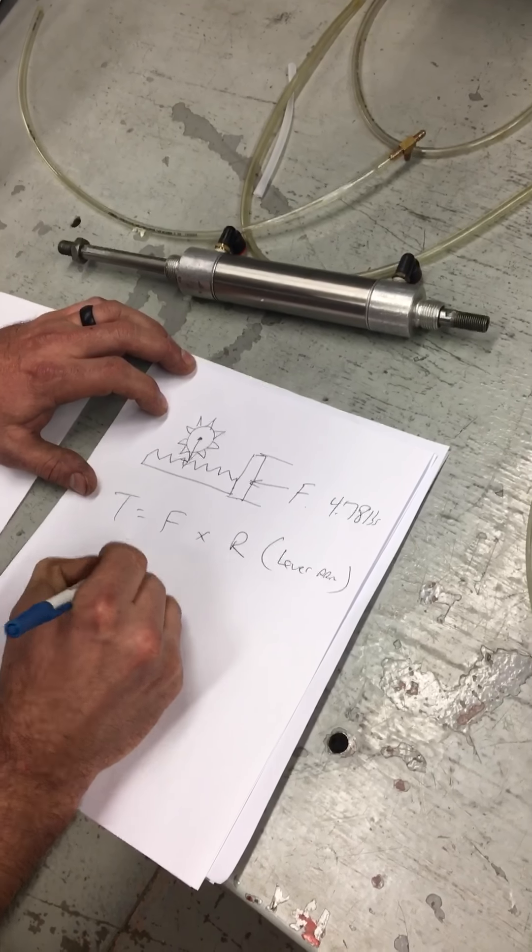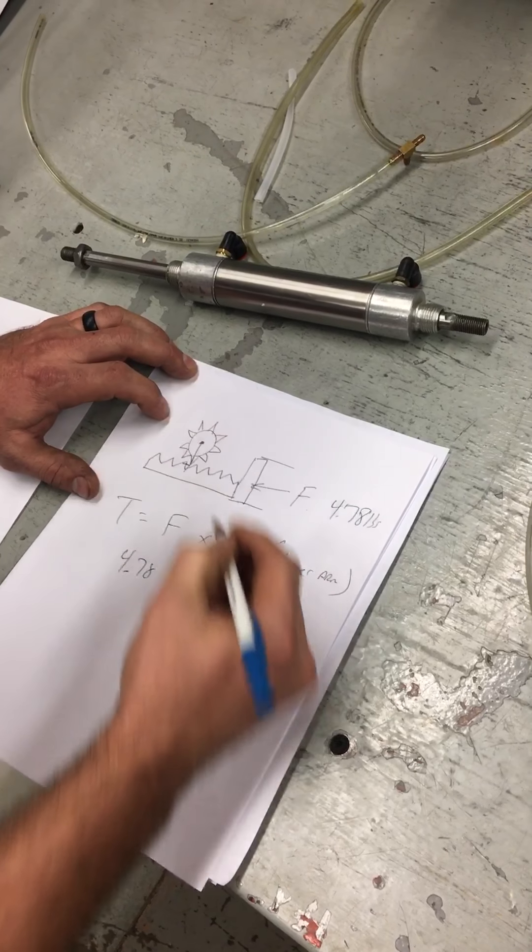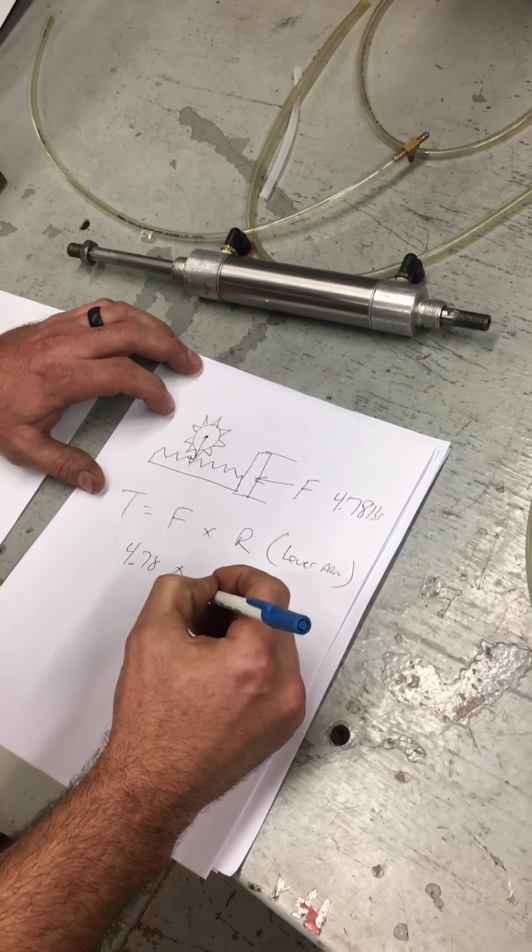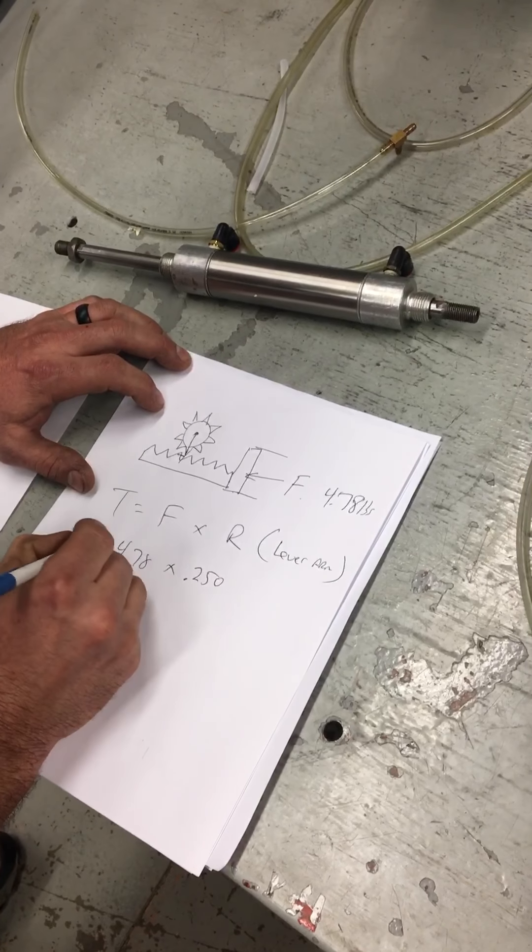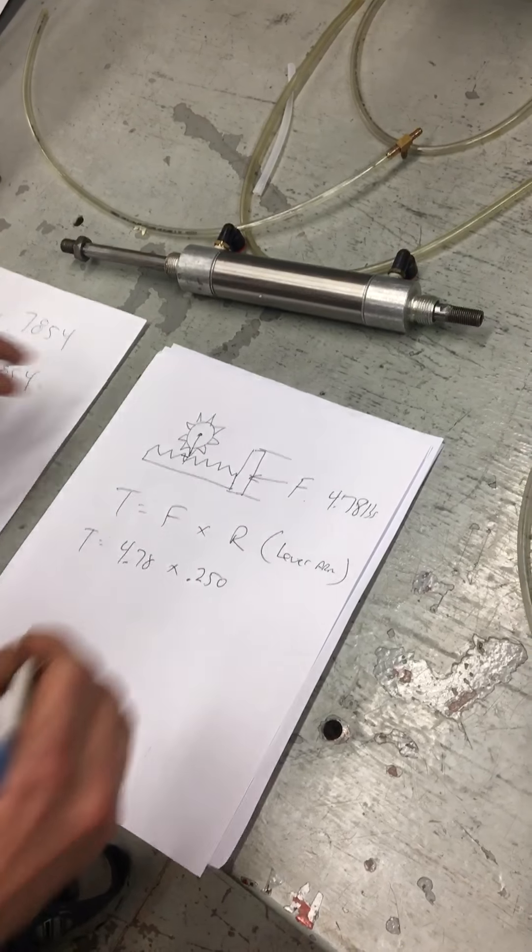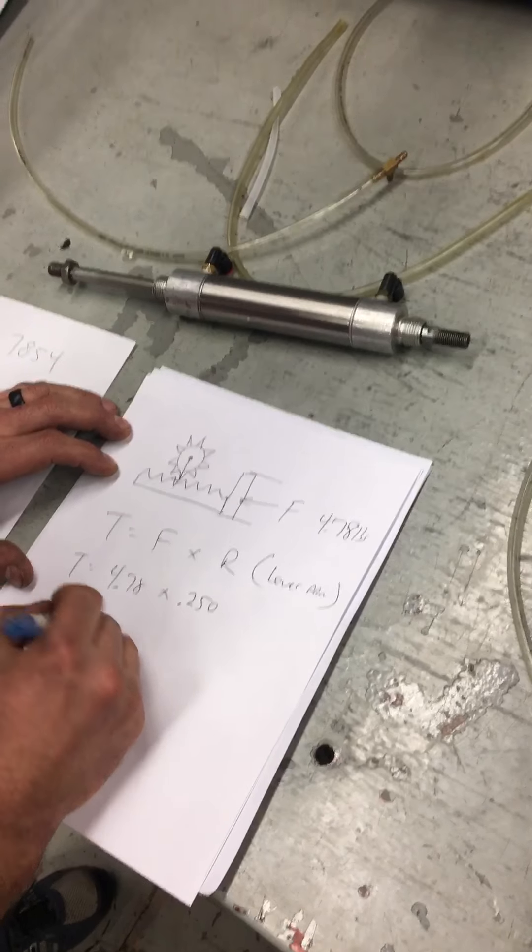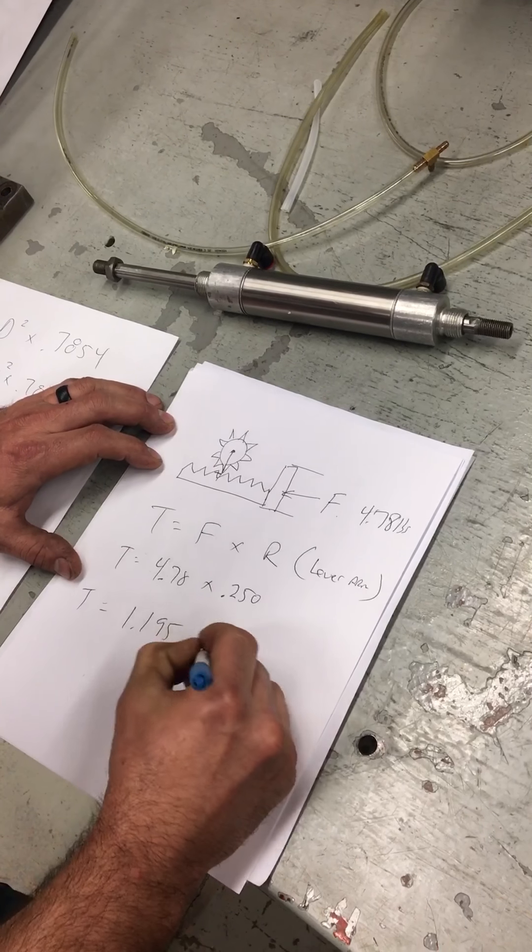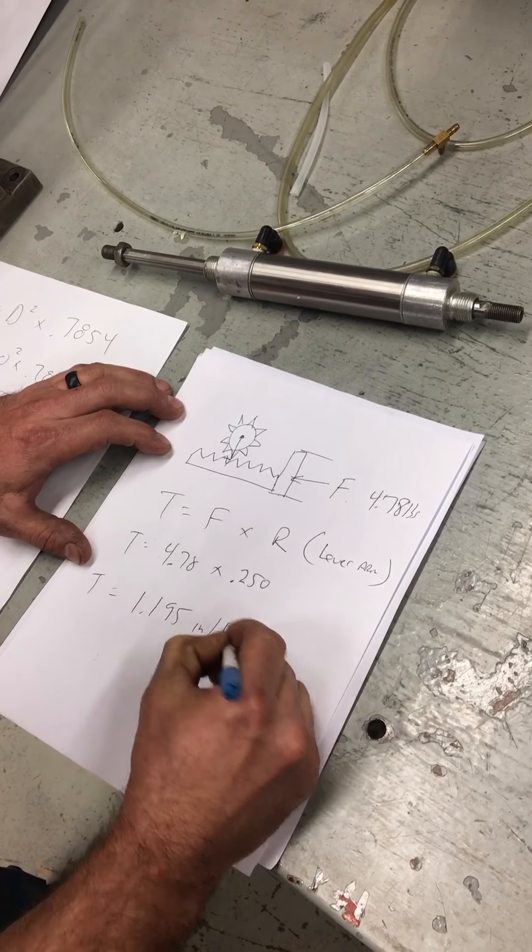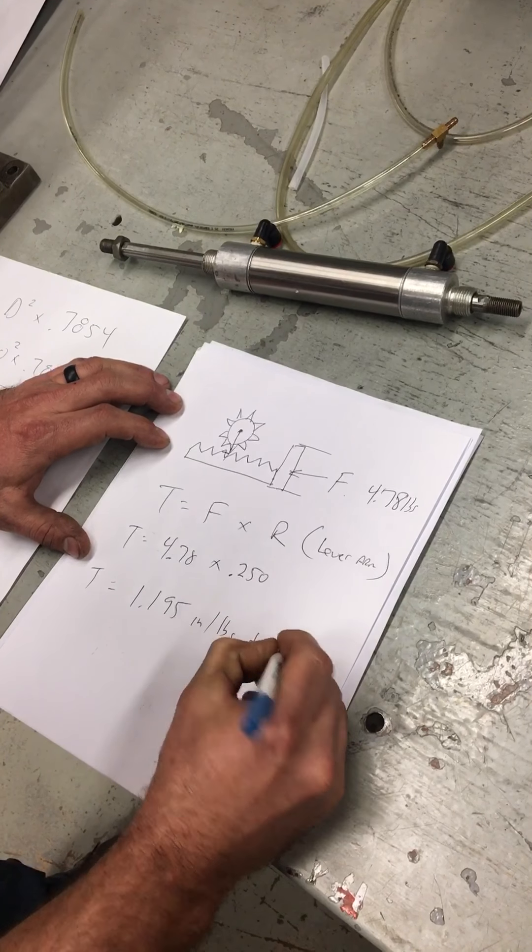So a force is 4.78 times the radius. We came up with a radius of 0.25, 250 thousandths, which equals, if you do that, comes up to 1.195 inch pounds of torque.